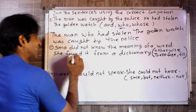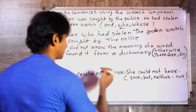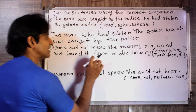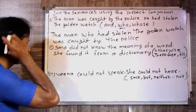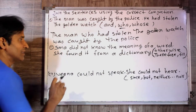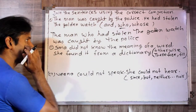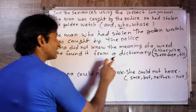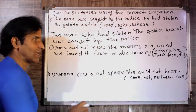अब दूसरा sentence है: 'Seema did not know the meaning of a word.' यह एक sentence हो गया. उसके बाद: 'She found it from a dictionary.' उसने इसे dictionary में ढूंढा. सीमा word का meaning नहीं जानती थी, तो उसने dictionary में ढूंढा — इन दोनों को जोड़ना है.